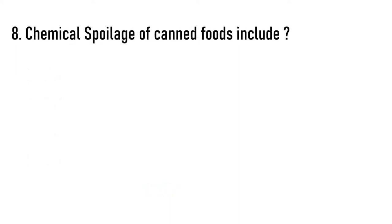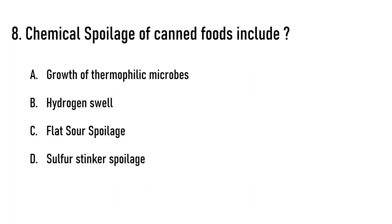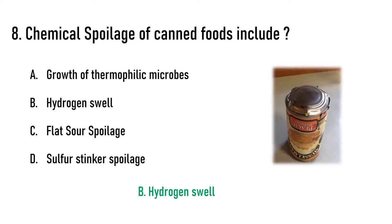Chemical spoilage of canned foods includes which of the following? Options are A) growth of thermophilic microbes, B) hydrogen swell, C) flat sour spoilage, D) sulfur stinker spoilage. The correct answer is option B, hydrogen swell. Don't get confused — hydrogen swell and sulfur stinker spoilage both involve chemicals, but sulfur stinker spoilage is caused by a bacteria, so it falls under microbial spoilage.